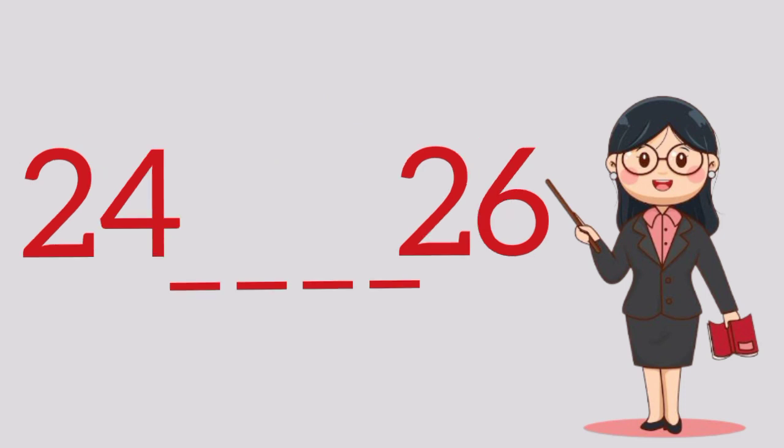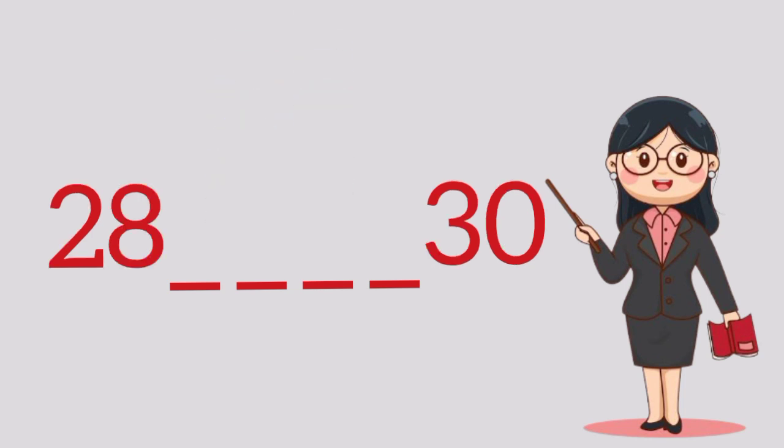What number comes between 24 and 26? It's the number 25. What number comes between 28 and 30? It's the number 29.